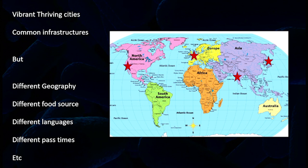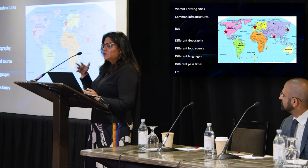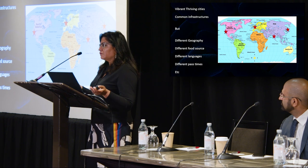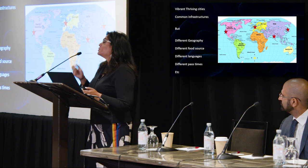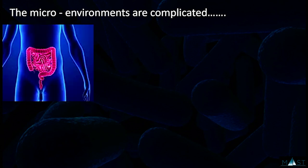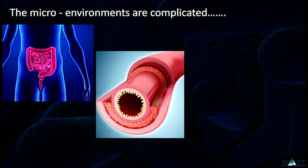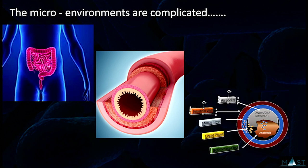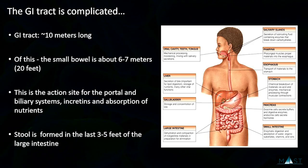Think of different cities — LA, Paris, Delhi, Tokyo — they all have the same infrastructure but different geography, food sources, languages, and character. Microbial communities in the gut are similar. We have about 30 feet of gut, and each segment has a different exposure, partial pressure, and pH. Microbes can live in different layers — mucosal or in the stool. This makes the microbiome an extraordinarily complicated topic — it's not a monolithic entity.